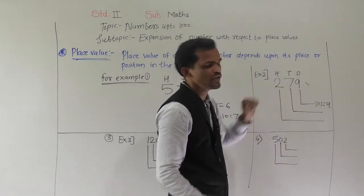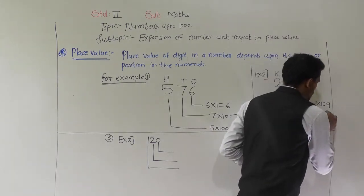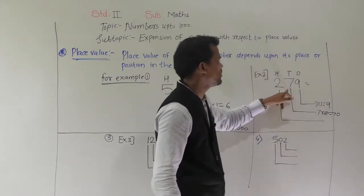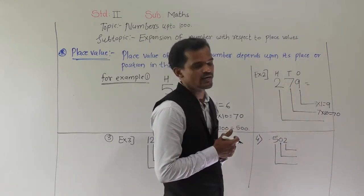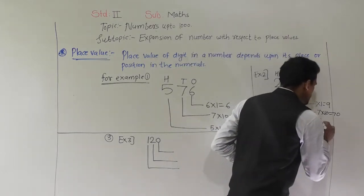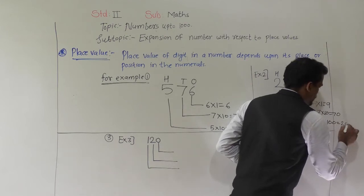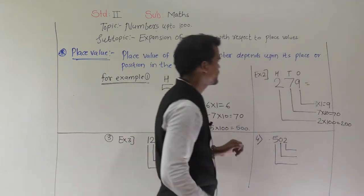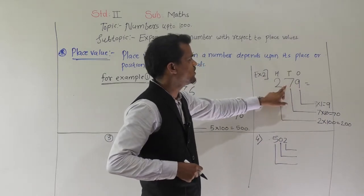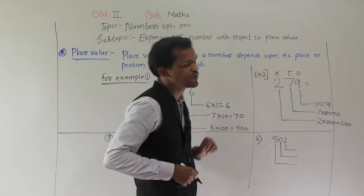7 comes at tens place, so 7 times 10 is equal to 70. Place value of 7 is 70. And 2 comes at hundreds place, so place value of 2 is 200. So in this number, place value of 9 is 9, place value of 7 is 70 and place value of 2 is 200.